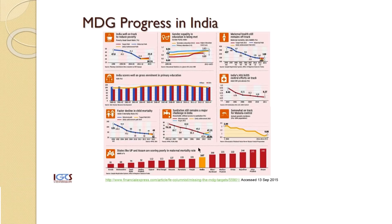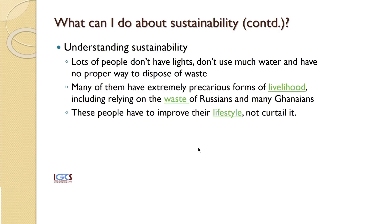Coming back to the question of what any individual can do about sustainability, the first issue is understanding what we mean by sustainable development or sustainability, and also paying attention to the fact that access to services — especially in the context of extreme poverty — having access to some of the services needed for a decent life is one of the most important things we should think about. Clearly some people will have to start increasing their footprint and many others will have to reduce their footprint, even in a country like India. Lots of people don't have lights, don't use much water, and have no proper way of disposing of waste — there need to be approaches to try and address their challenges.